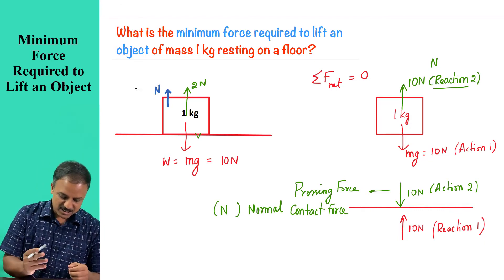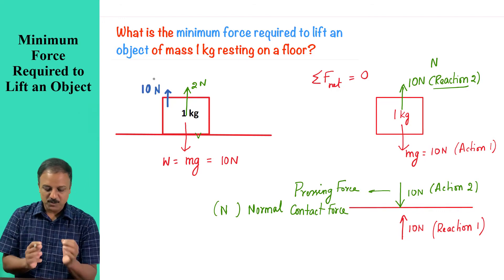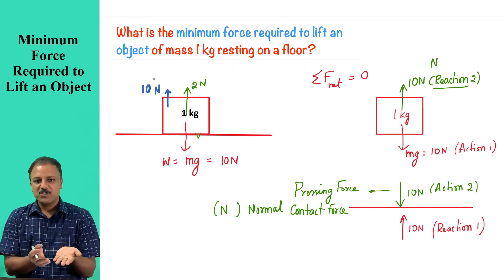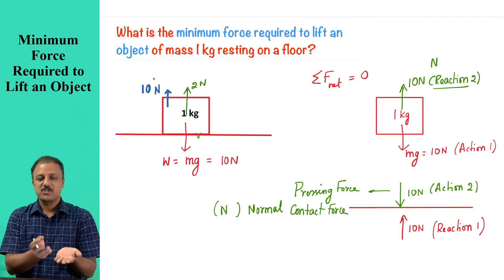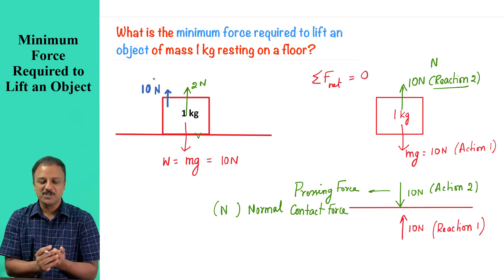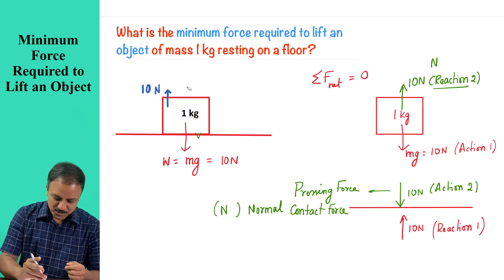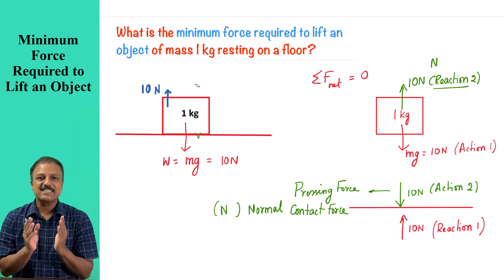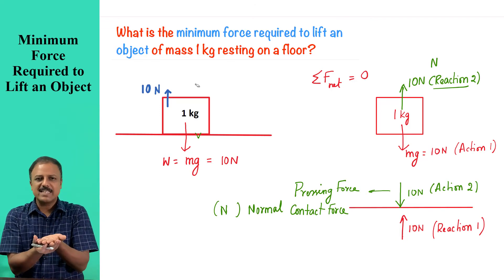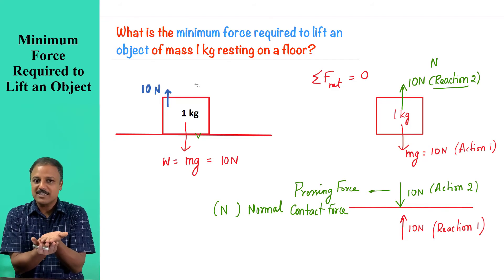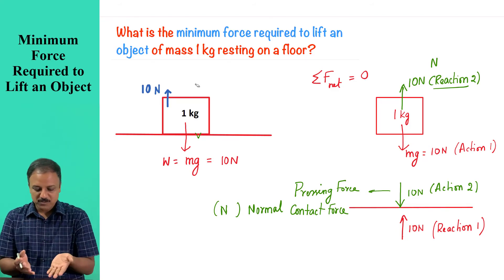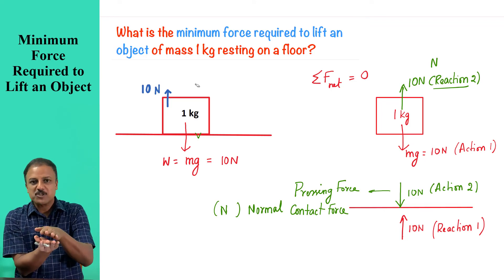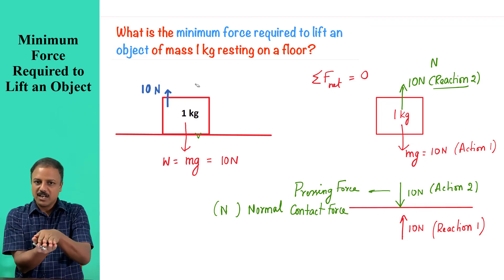If I exert an external force of 10 Newton, the pressing force has to reduce by 10 Newton — it becomes 0. When the pressing force becomes 0, the normal contact force is 0. It means the object has just left contact, but it is ready to move now. It is still not moving — the upward force is 10 Newton and the downward force is 10 Newton, but the object is not moving. It has just left contact at the microscopic level.